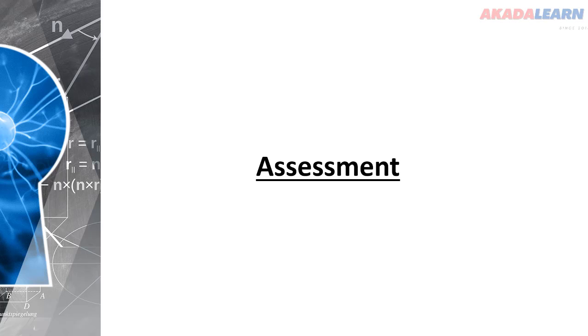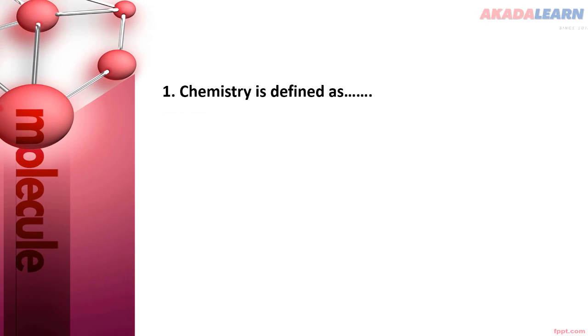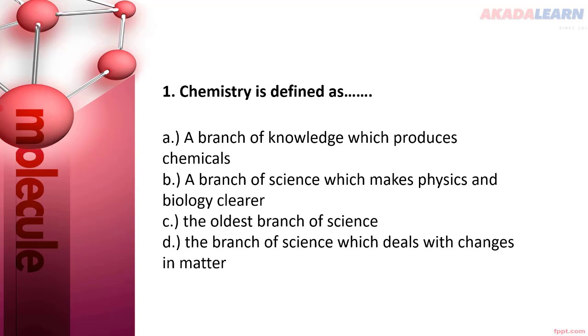Question one: Chemistry is defined as A) a branch of knowledge which produces chemicals, B) a branch of science which makes physics and biology clearer, C) the oldest branch of science, or D) the branch of science which deals with changes in matter.